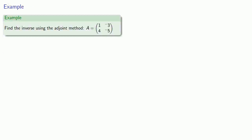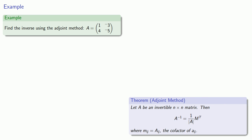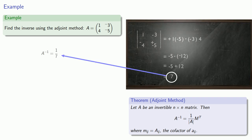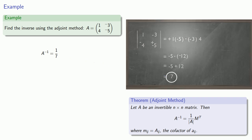For example, consider the 2x2 matrix. We'll find the inverse using the adjoint method. For that, we need the determinant, which we found earlier. Now we'll form the matrix of cofactors.